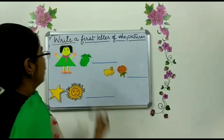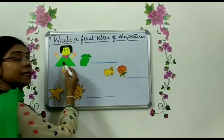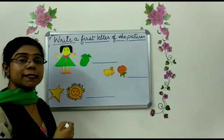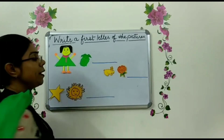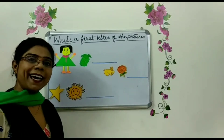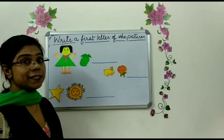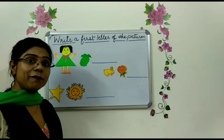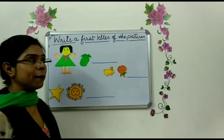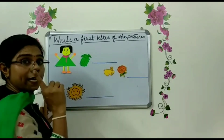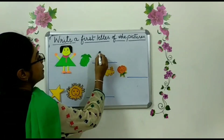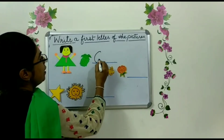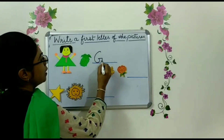So now children, another picture. What is this? Yes, this is G for girl. And this one? Yes, this is G for grapes. So the first letter of the picture is G for grapes.